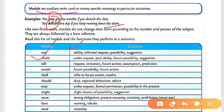'Can' is used for: ability (e.g., 'I can swim'), informal requests (e.g., 'Can I take your pen?'), possibilities (e.g., 'This can happen'), and suggestions (e.g., 'You can do it' or 'It is better if you can complete the tasks before the summer break').